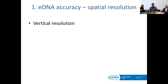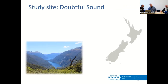We were also interested in vertical resolution — this part isn't published yet, so I'd ask you not to spread it too far, but here are some preliminary results. This experiment looks at vertical transfer of DNA in stratified water bodies. The study site was Doubtful Sound — the fjords are an obvious choice, with a very strong distinction between the freshwater layer on top and ocean water further down the water column.